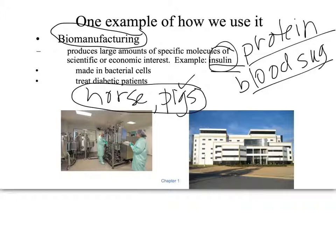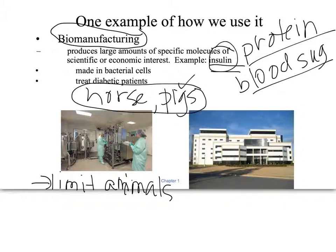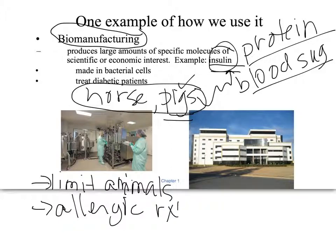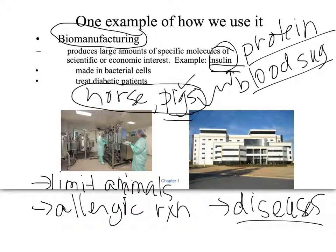There are all sorts of limiting problems with that approach. First, you have a limited number of animals, so you might run out, and growing pigs is expensive. Second, the insulin that pigs produce naturally may not look exactly like human insulin, so some people might have an allergic reaction to it. Third, there could be diseases — the pigs or horses could carry a virus that you'd be introducing into the patient.